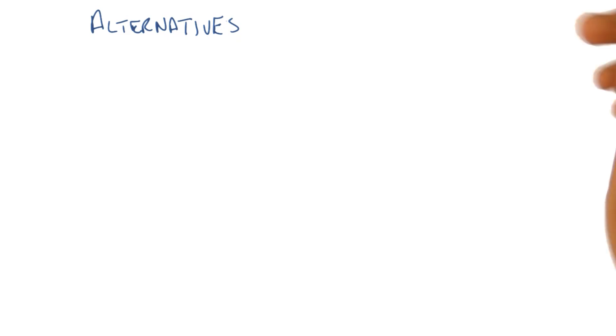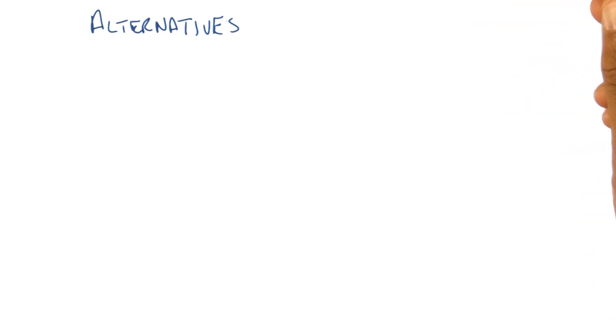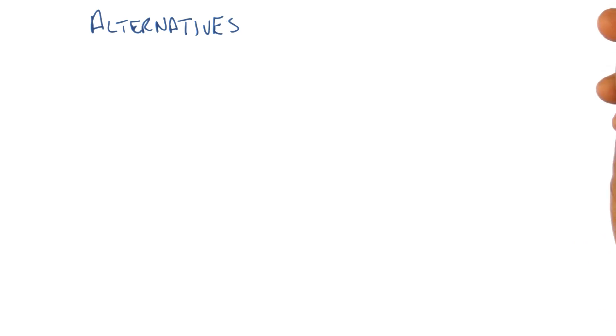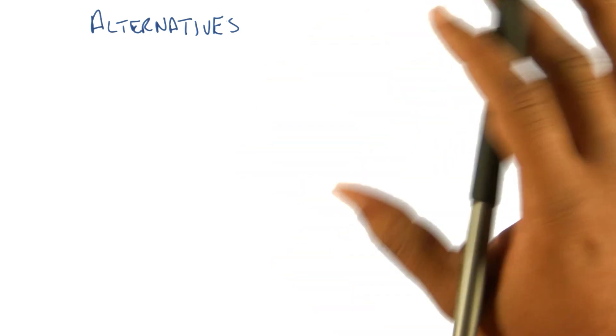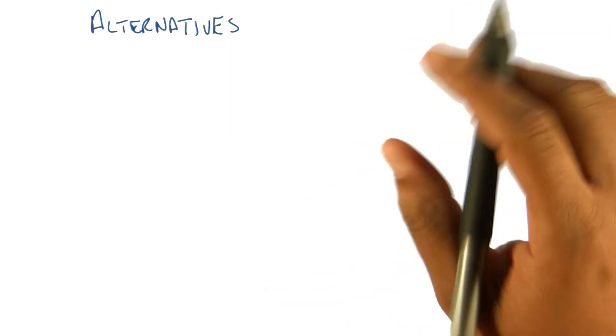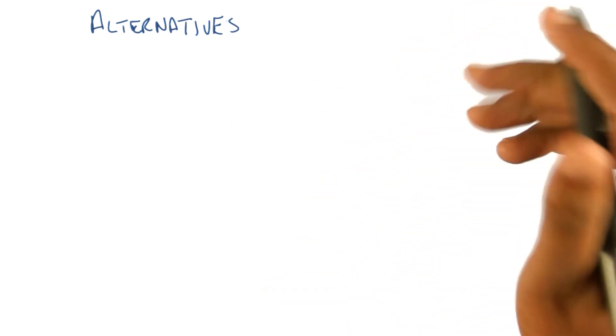We've talked about PCA and ICA, and they both work remarkably well in the specific domains that they're designed for. They've been applied for decades on a wide variety of problems for doing this sort of feature transformation.